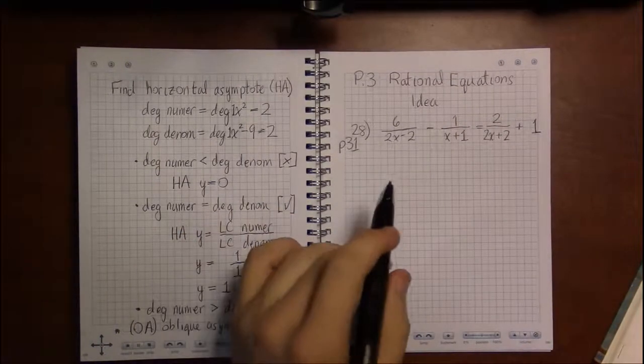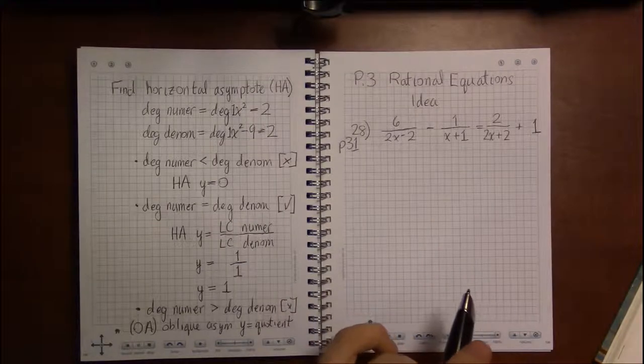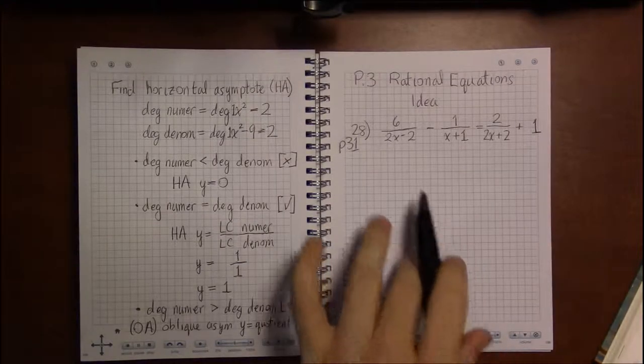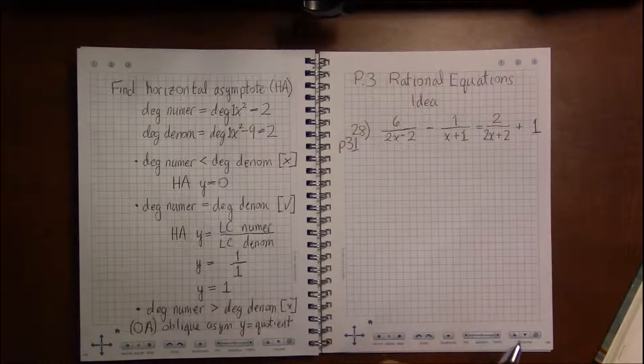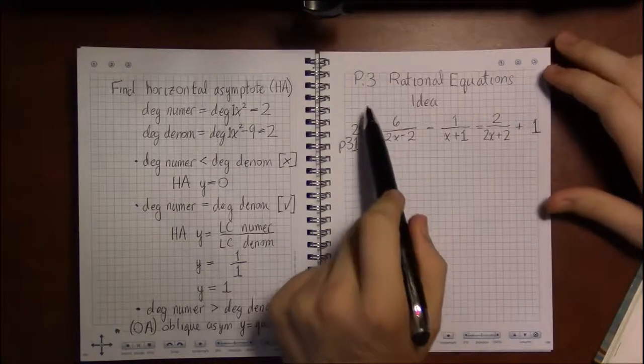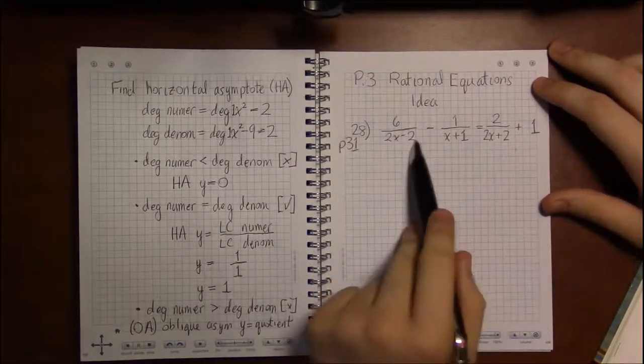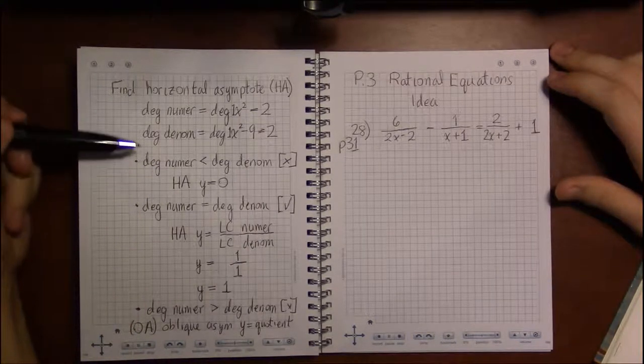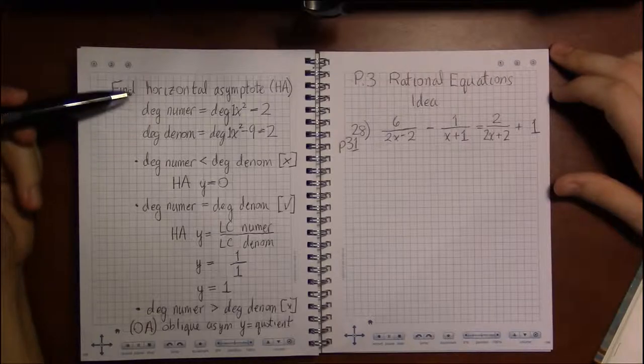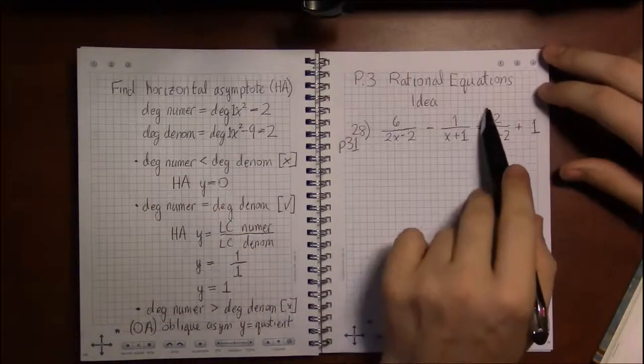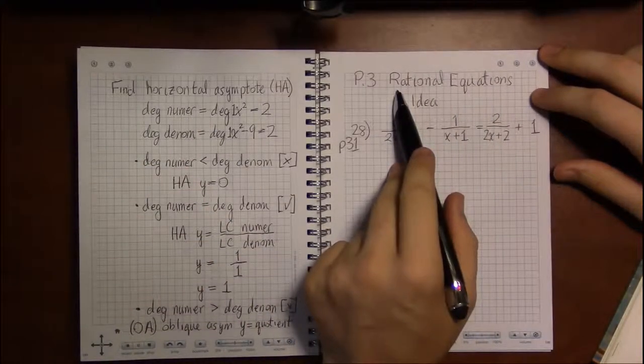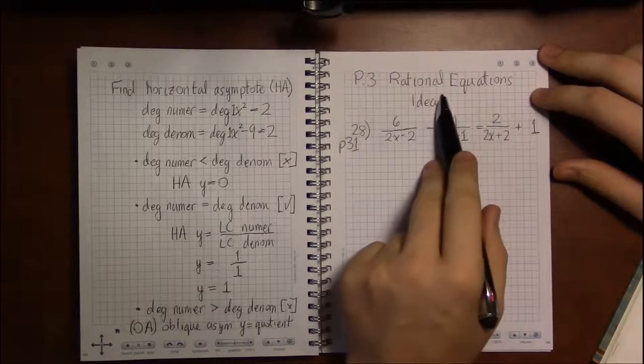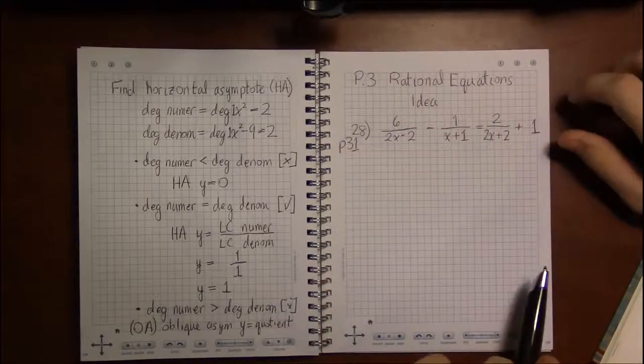Alright, this I promise is the last time we're going to step back into P3 and P4, but we need to touch upon this, especially P4, to finish off the section on graphing rational functions. So we're going to start out with rational equations in P3 and then deal with rational inequalities in P4.